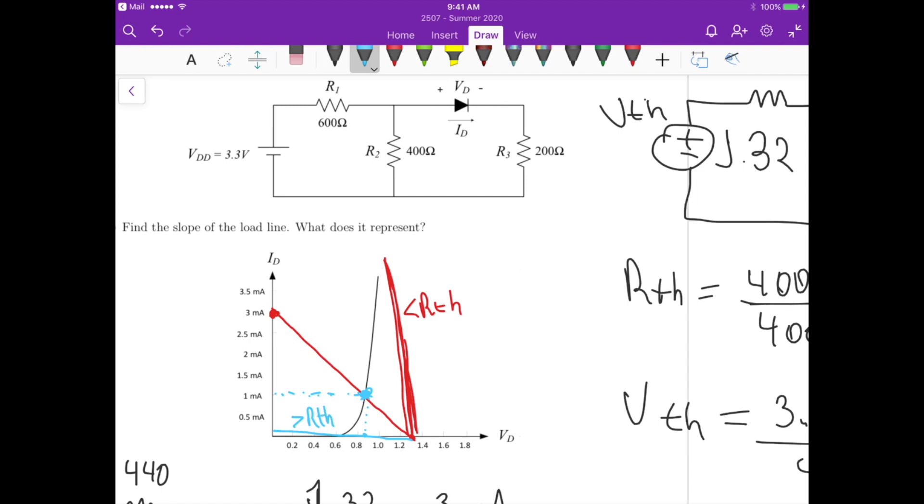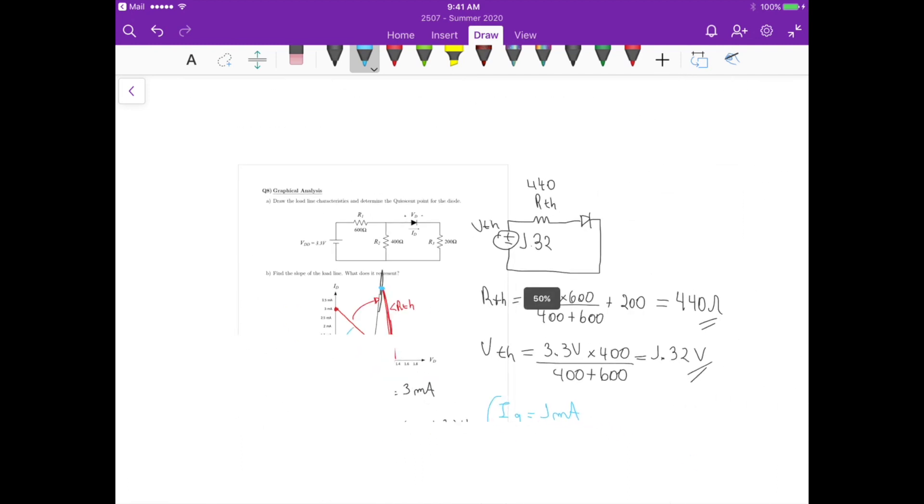So we basically control this curve here. So if we decrease RTH, we go there. If we decrease RTH, we go here. And then you see that we are basically, so if this curve would go up there, we are basically changing the quiescent point or the operating point of the diode. So that's the representation. What does it represent? It basically controls the slope, and it gives us different operating points of the diode.